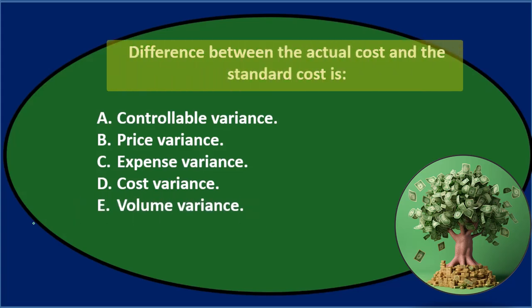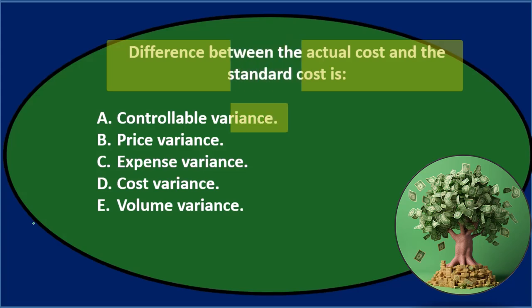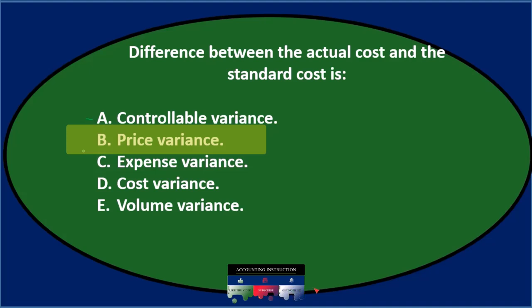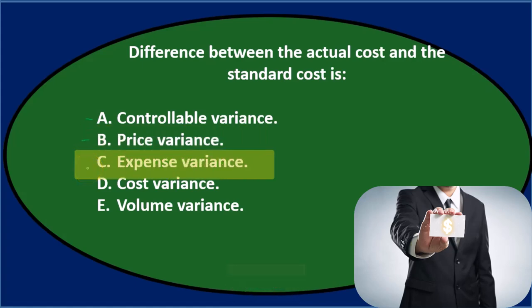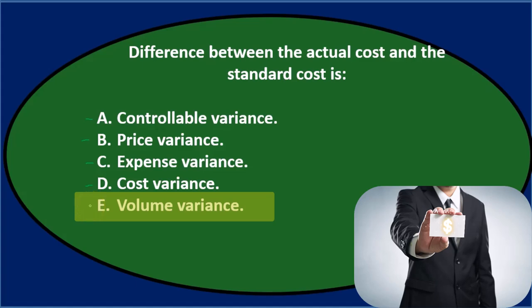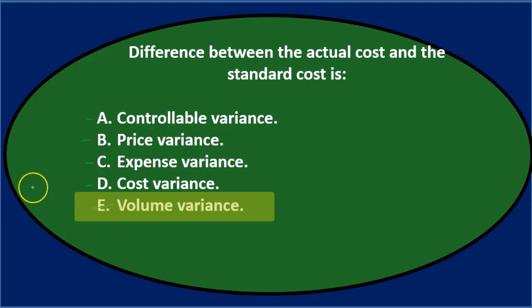Difference between the actual cost and the standard cost is... Controllable variance sounds kind of reasonable. Price variance - we're talking about the cost, so that could be another word for cost. Expense variance - again we're talking about the cost possibly. Cost variance sounds almost too good to be true, almost too correct, normal. And the volume variance - I don't think it's going to be the volume variance, I'm going to cross out the volume just so we can cross one out here.